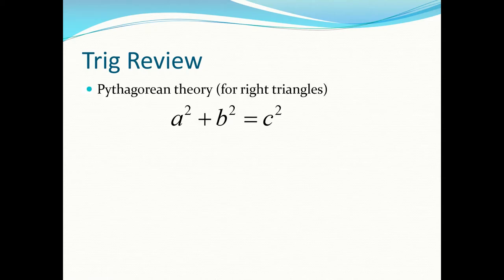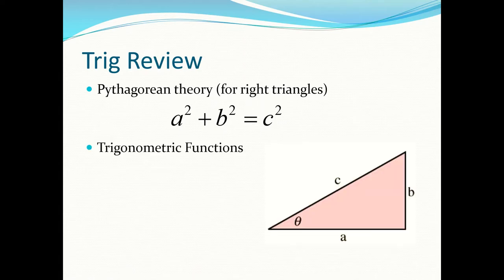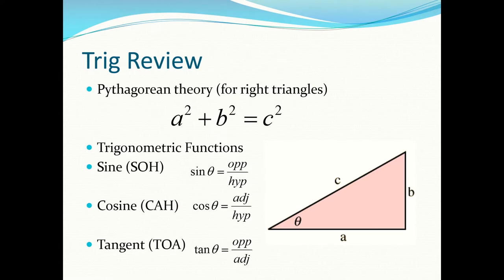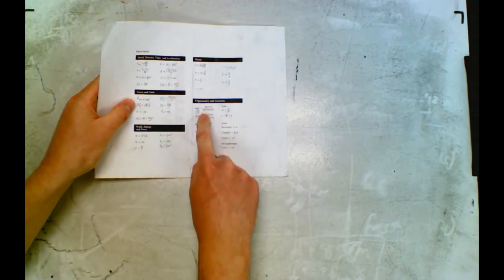You need to know trigonometry for this unit. That means Pythagoras' theorem — a² + b² = c² — which you learned in junior high. You also need SOH-CAH-TOA from grade 10 math, which might be a bit rustier. In SOH-CAH-TOA, adjacent, opposite, and hypotenuse are labeled relative to the angle you're finding, and it's all in your data booklet under trigonometry and geometry.